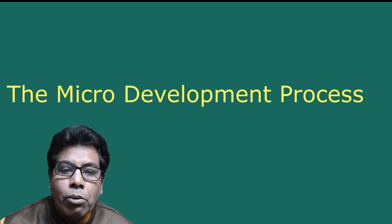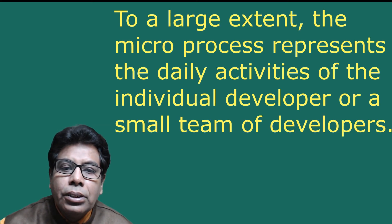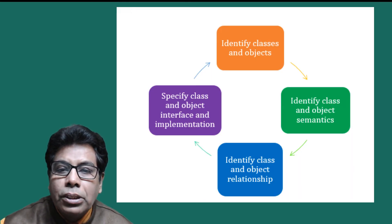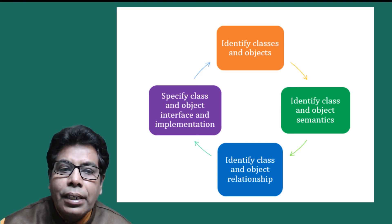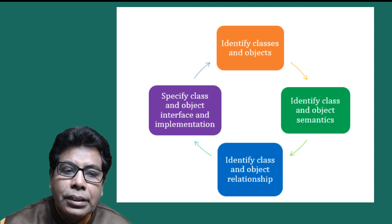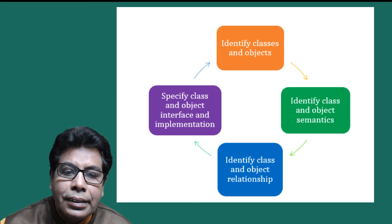Now let us go to the micro development process. To a large extent, the micro process represents the daily activities of an individual developer or a small team of developers. The micro process applies to the software engineer and to the software architect. The micro process tends to track the following activities: identify the classes and objects at a given level of abstraction, identify the semantics of these classes and objects, identify relationships among them, and specify the interface and implementation of these classes and objects.